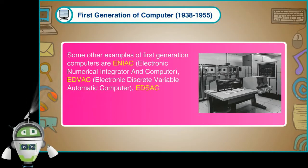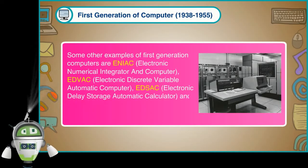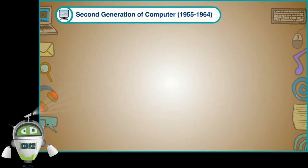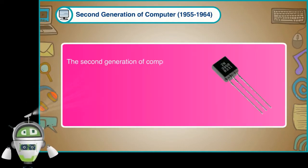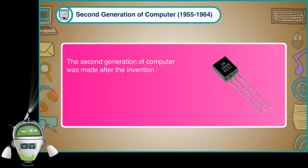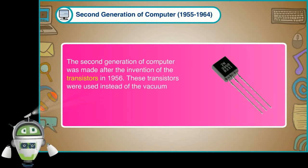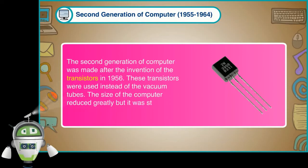Second Generation of Computer 1955-1964. The second generation of computer was made after the invention of the transistors in 1956. These transistors were used instead of the vacuum tubes. The size of the computer reduced greatly but it was still very big.